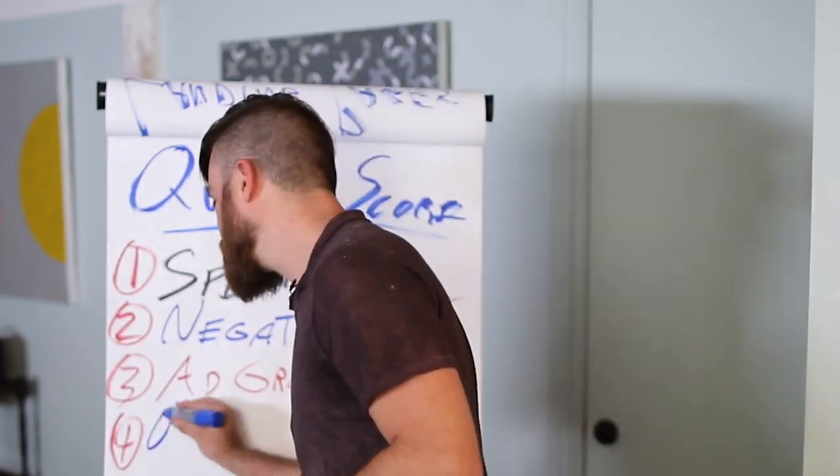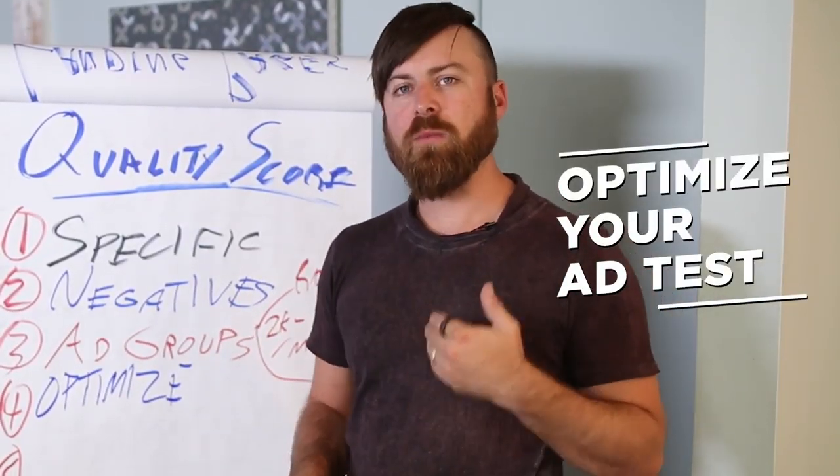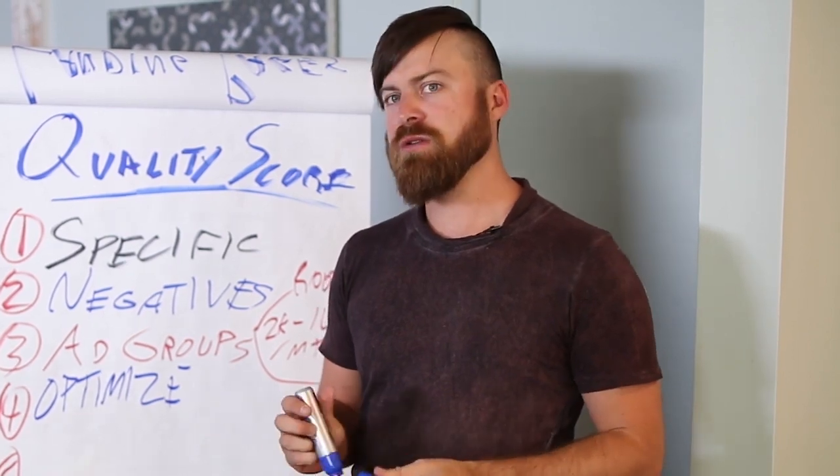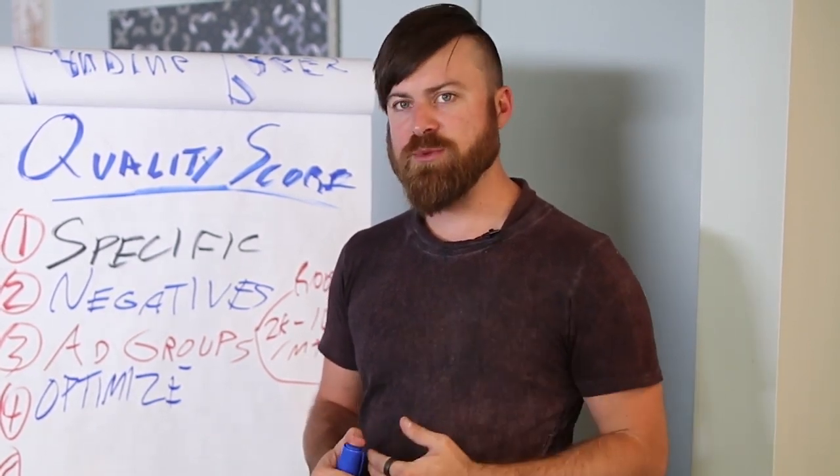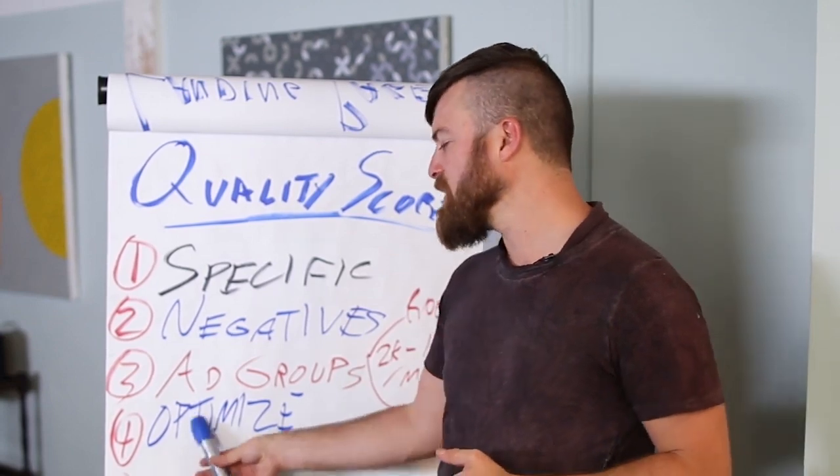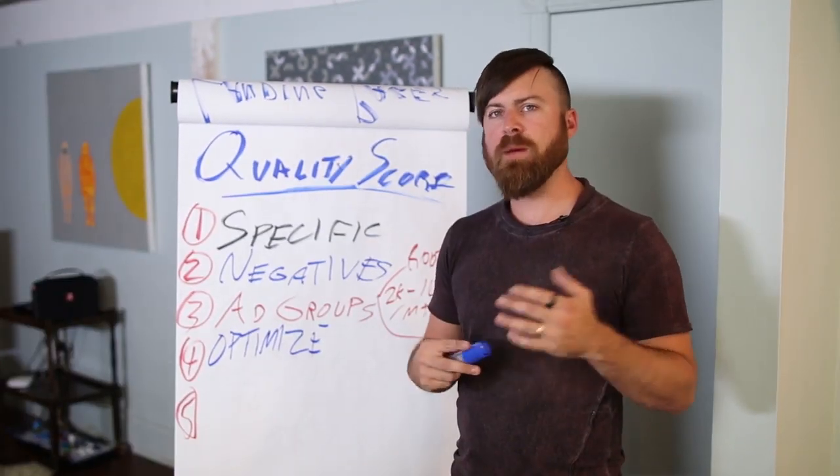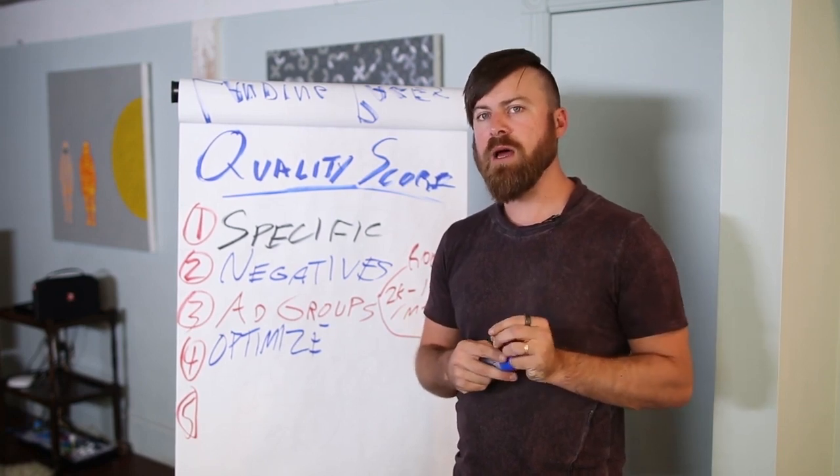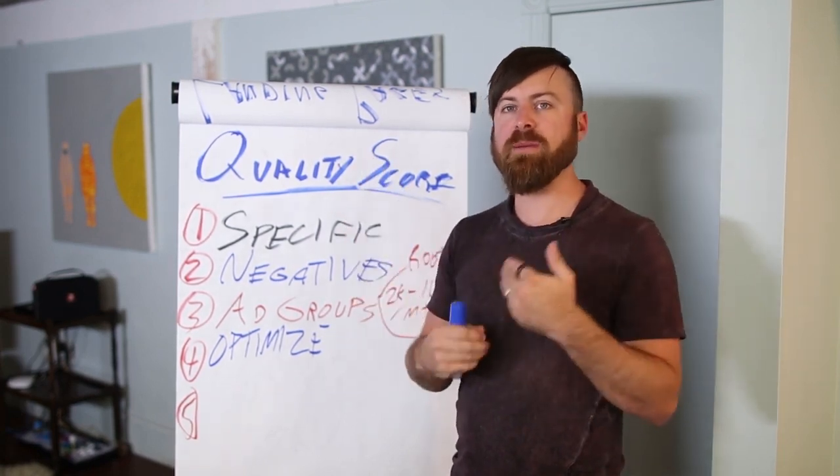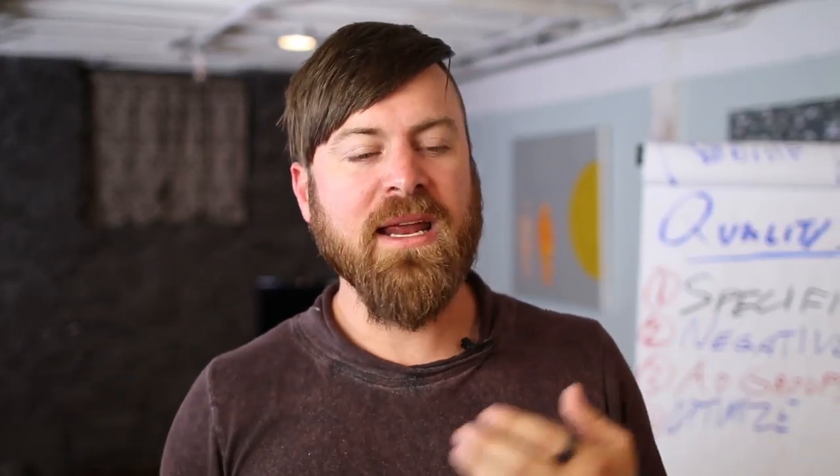How you do that is by optimization. Optimization means that whenever you do an ad, write down 10 other headlines that you can use in the ad. Write out 10 other description lines. Write out a bunch of different versions of your ad and test them. Have them compete against each other. Generally speaking, if you put up 20 ads, maybe one or two of them will actually be winners. It's just data. That higher click-through rate will reward you with a higher quality score and a lower cost per click. Therefore, each prospect coming to your website will end up costing you a lot less money.